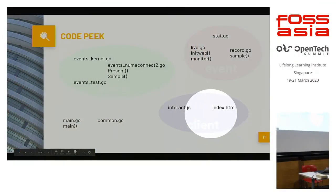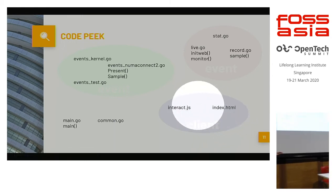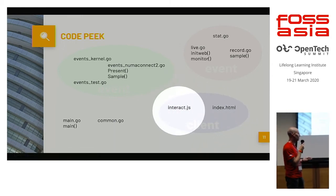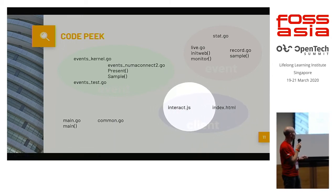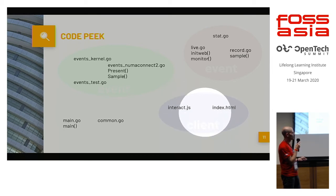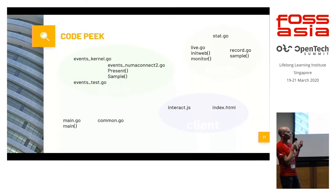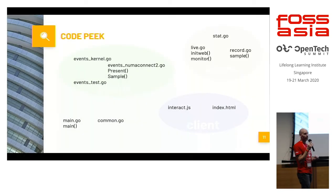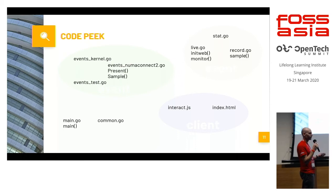I have two files — interact.js and index.html — which are served by the built-in Go web server. That means you can run this application on an internal network not exposed on the internet, with no external files or resources needed.